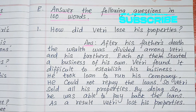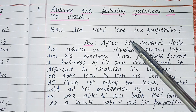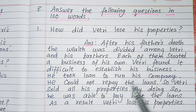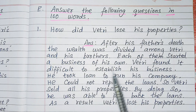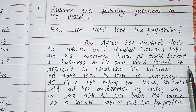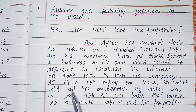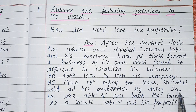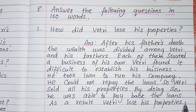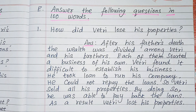Answer the following questions in hundred words. First one: How did Vettri lose his properties? After his father's death, the wealth was divided among Vettri and his brothers. Each of them started a business of his own. Vettri found it difficult to establish his business. He took a loan to run his company. He could not repay the loans, so Vettri sold all his properties. By doing so, he was able to pay back the loans. As a result, Vettri lost his properties.